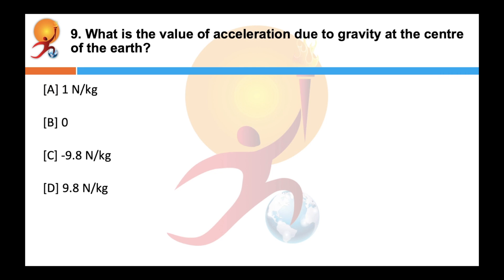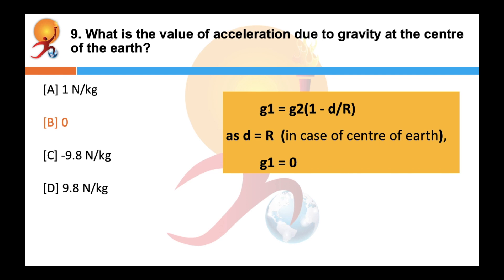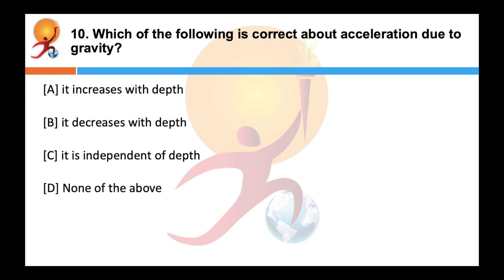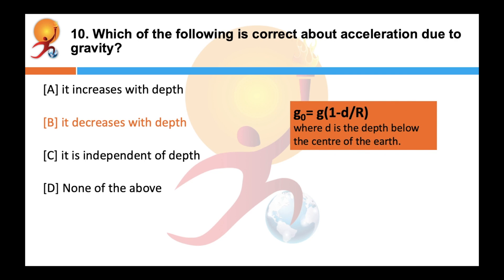What is the value of acceleration due to gravity at the center of the earth? Correct answer is zero. The value of acceleration due to gravity decreases with depth, as given by the formula: g' = g(1 − D/R), where D is the depth below the surface of the earth.